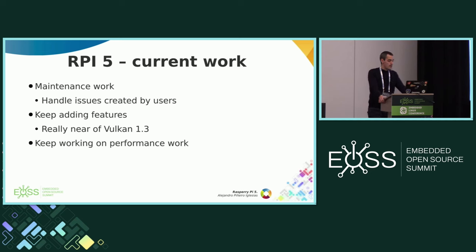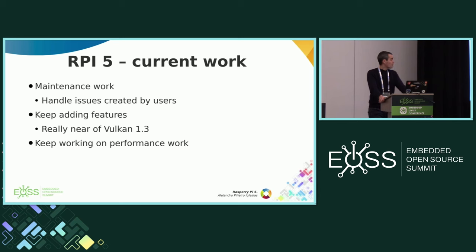So, what are we doing right now? Obviously the maintenance work — this is a new device, it has less than six months, so we are getting issues created by users. We are still adding features. The good thing is that most of the feature work we are doing can be used for both the Raspberry Pi 4 and Raspberry Pi 5. We are really close to implementing the functionality needed for Vulkan 1.3. And for the Raspberry Pi 5, we are working on performance improvements.